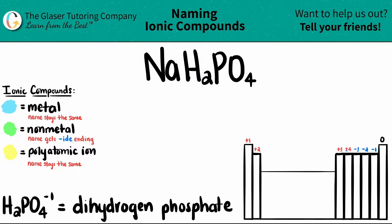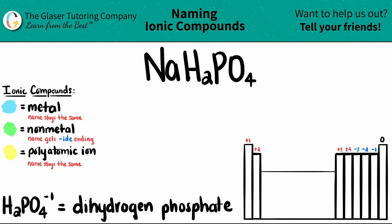Today we are going to be naming the ionic compound NaH2PO4. Here's a little trick: if you have an ionic compound that has three or more different elements in it, you know that you have at least one polyatomic ion. So it's always easiest to spot out the polyatomic ion and then work from there to name.